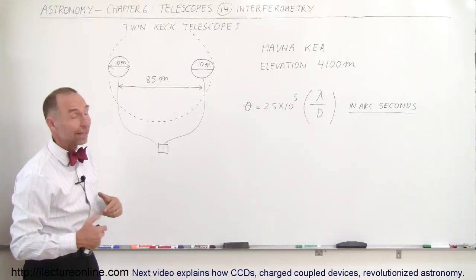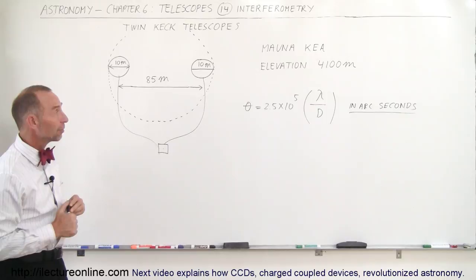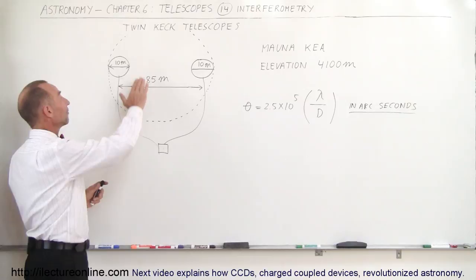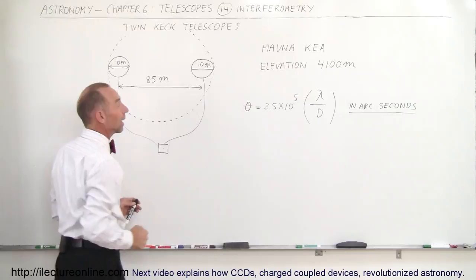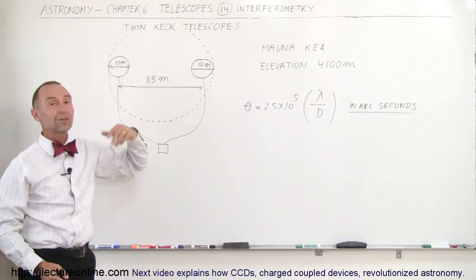If we use adaptive optics to make sure that the images are clear so we don't have to worry too much about the turbulence of the atmosphere, we get very high resolution images. The only drawback is you still only have these collecting areas for the picture. The area is still pi r squared, and the diameter being 10 meters means a radius of 5 meters. The total surface area of these two are only twice pi r squared, or twice pi times 5 meters squared.